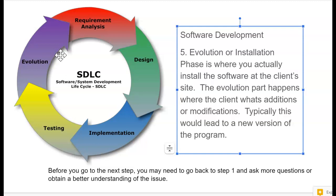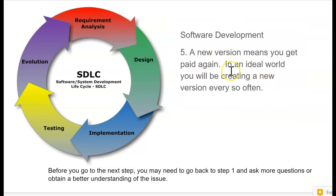As the program evolves, the client says things such as, 'Hey, it does what I asked for, but can it also do this or that?' And that's the beginning of the next version. That means quite possibly you're going to get paid a second time. A new version means you get paid again. In an ideal world, you will be creating a new version of this software more than once — version one, two, three — every so often it'll evolve.